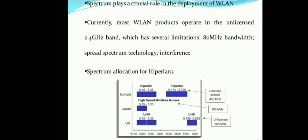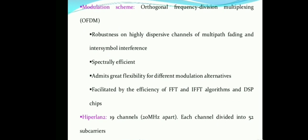The spectrum plays a crucial role in wireless LAN deployment. Spectrum is the range of bandwidth used for transmitting or receiving signals. Currently most wireless LAN products operate in the unlicensed 2.4 GHz band, which has limitations — only 80 MHz of usable bandwidth — and suffers from interference. Spectrum allocation for HiperLAN 2 is available in the 5 GHz band.